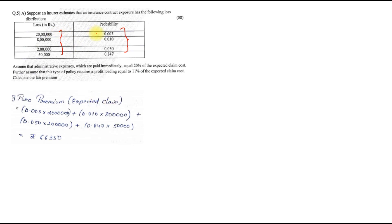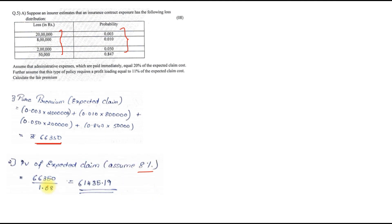Step 1: find the expected claim cost — loss × probability. So 20 lakh×0.003, 8 lakh×0.010, 2 lakh×0.050, and 50,000×0.847. The total expected claim comes to 66,350. Step 2: find the PV of expected claim = 66,350 ÷ 1.08 = 61,435.19.